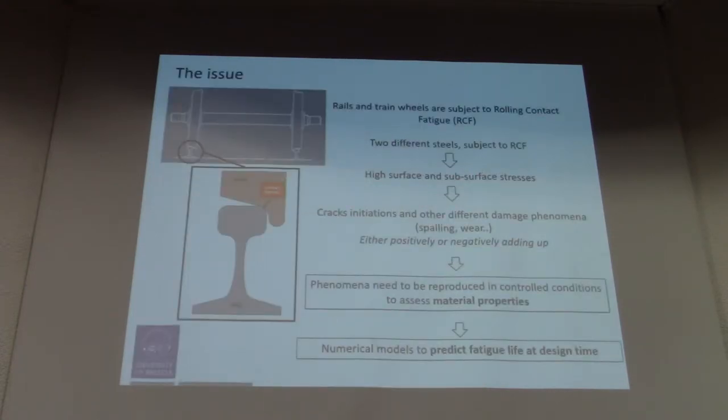The issue is that rail and train wheels are subjected to rolling contact fatigue. Usually we have two different steels subjected to rolling contact fatigue with high surface stresses, and then procrastination and other different damage phenomena such as spalling, pitting, wear, and so on.